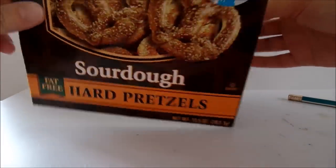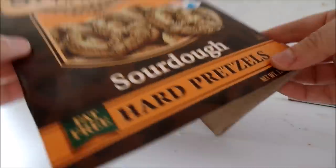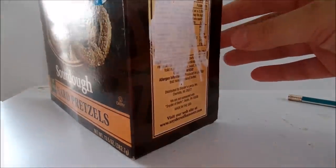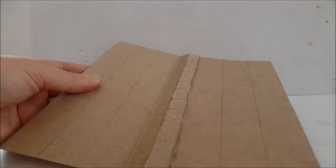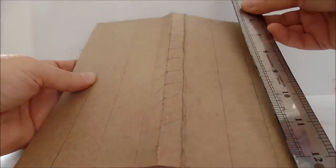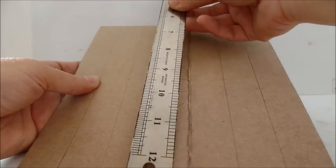I start with what used to be a cardboard box. I took a piece of cardboard that is exactly the size of seven of these rulers.